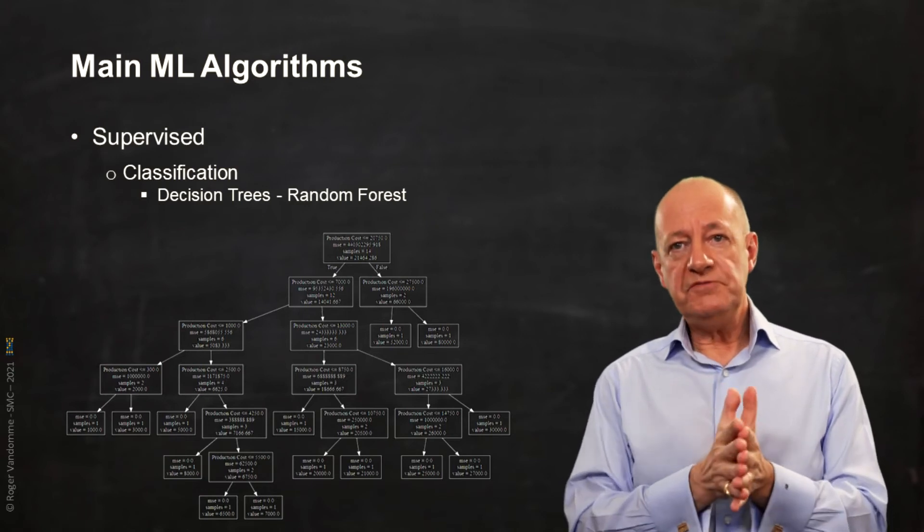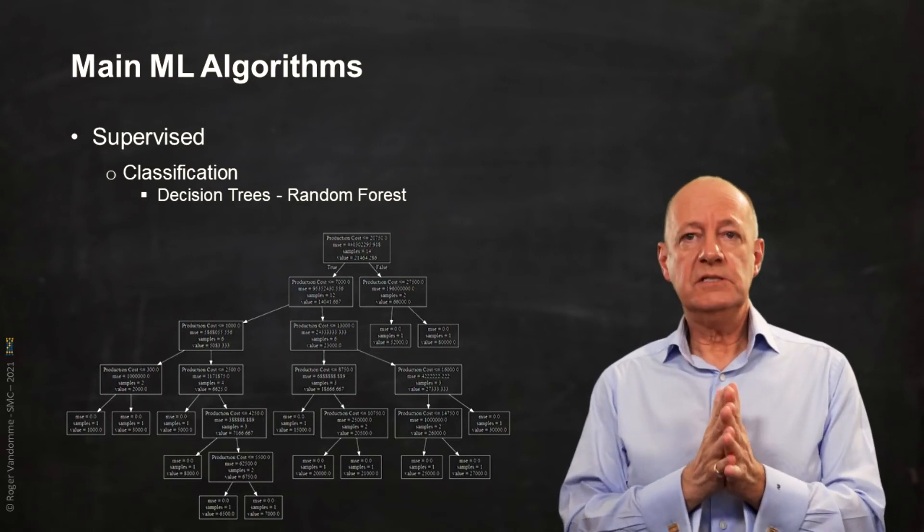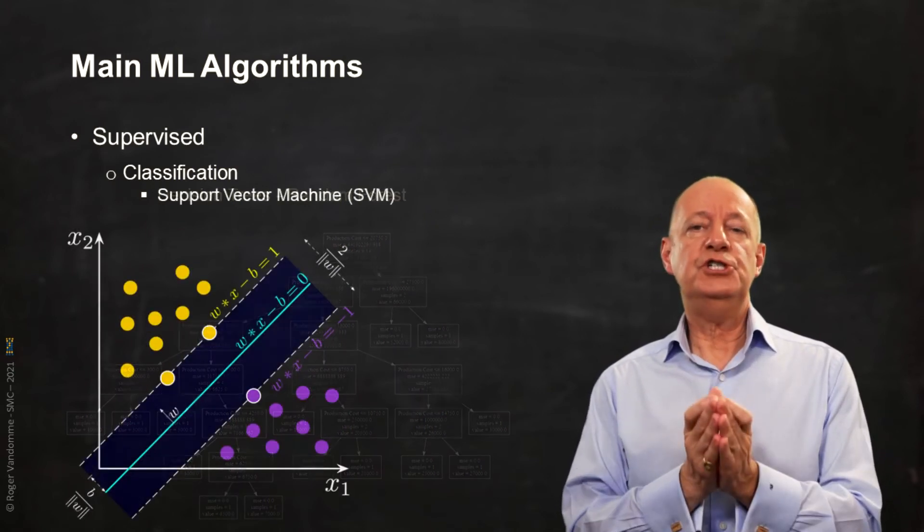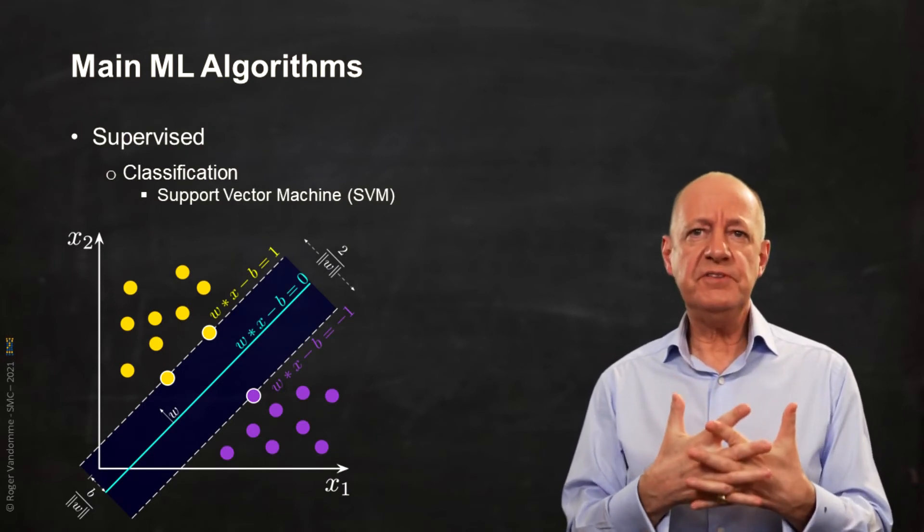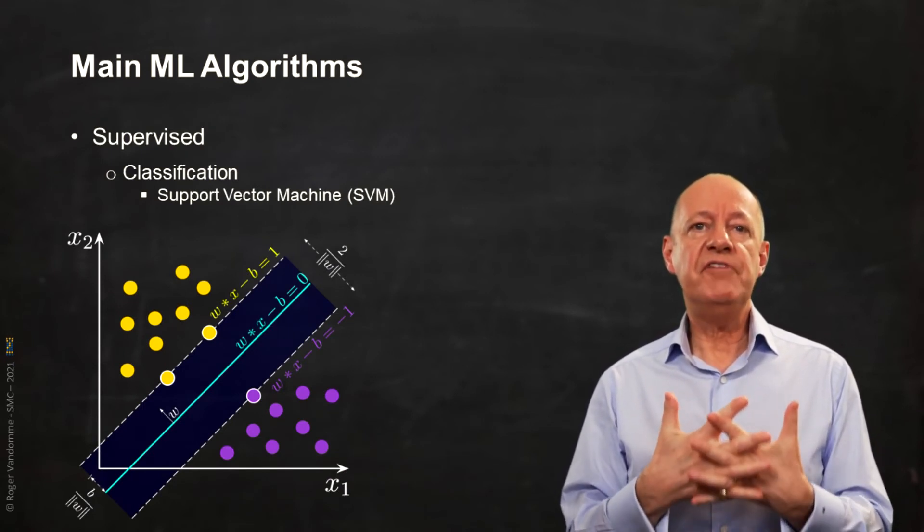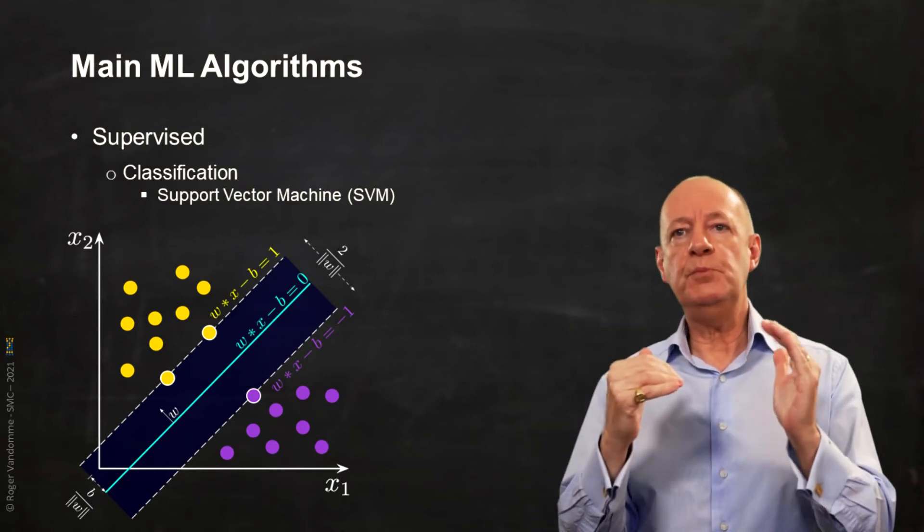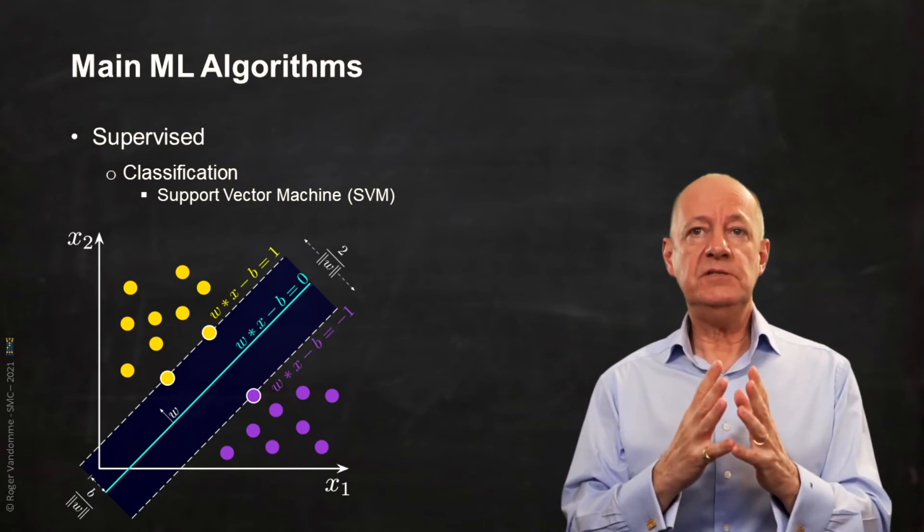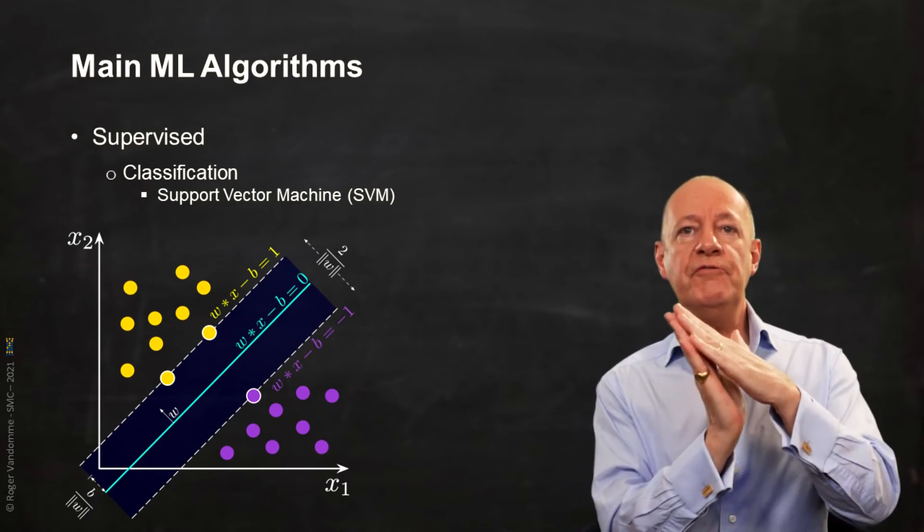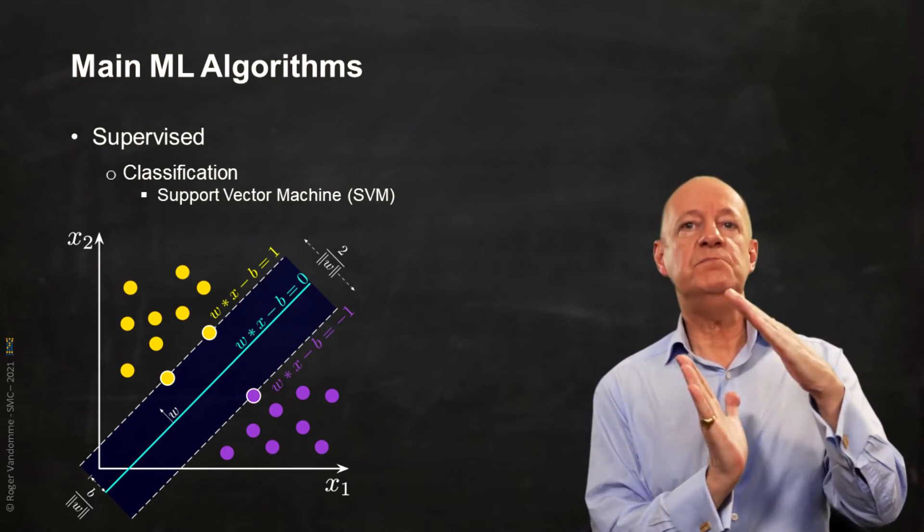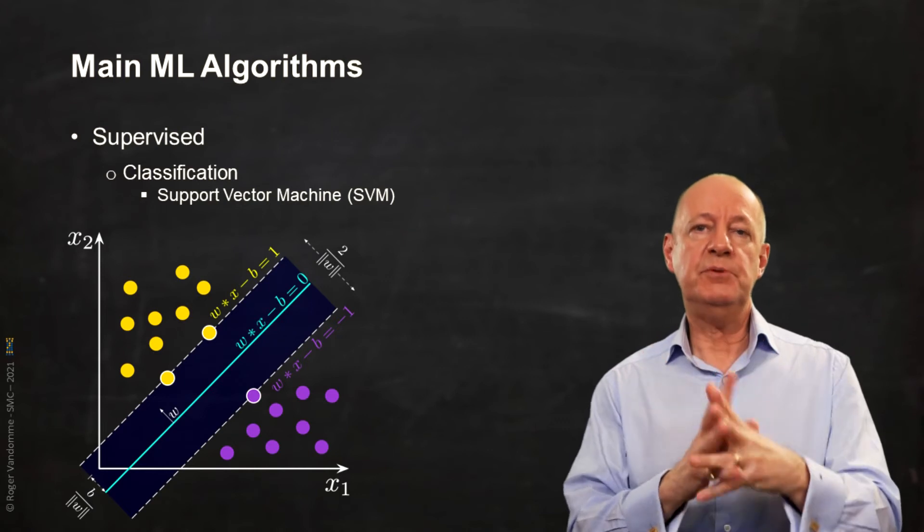More sophisticated and complex is support vector machine or SVM. This algorithm consists in finding the optimal dividing line between two populations. It does it by finding the line that offers the widest space between the two populations to be separated.